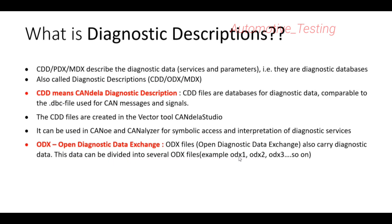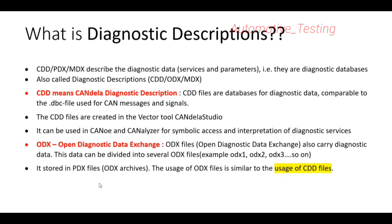ODX data can be divided into several ODX files — for example, ODX1, ODX2, ODX3 — and combining these files creates a PDX file, which is an ODX archive. So ODX1, ODX2, ODX3 archived together is called a PDX file. The usage of ODX files is similar to the usage of CDD files.